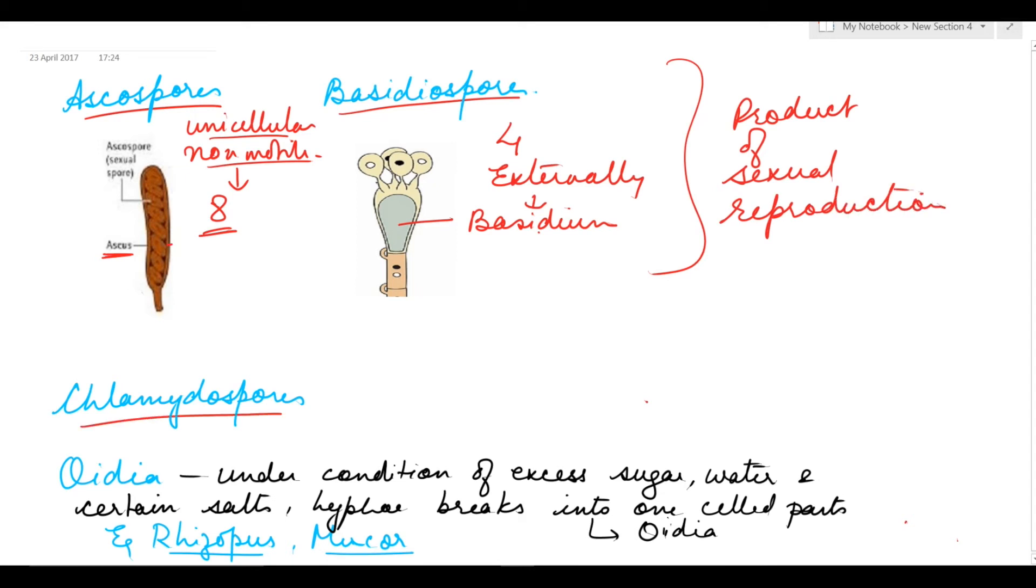Next, the chlamydospores. These are resting spores formed under unfavorable conditions in fungi like Rhizopus and Mucor. Under conditions of excess sugar, water, and certain salts, the hyphae breaks up into one-celled parts which are called oidia. They are capable of growing into new mycelium.